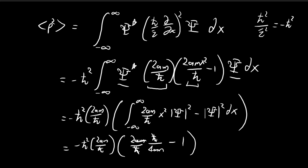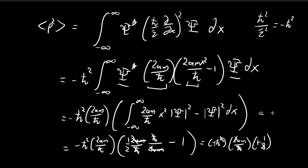Immediately you can see a lot of terms cancel. This is just equal to one-half. So you have one-half minus one, which equals negative one-half. So we have negative h-bar squared times 2am divided by h-bar times negative one-half. The negative signs cancel, the h-bar cancels, and the twos cancel. In the end, you have am h-bar. This is your expected value of momentum squared.